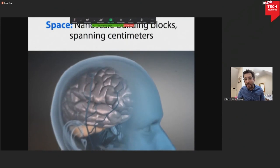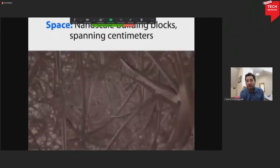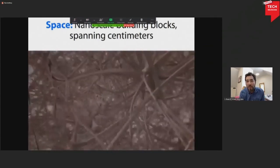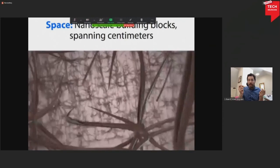One is space and one is time. So what do I mean by that? Well, brain cells, neurons are gigantic cells. They can be centimeters in spatial extent. But if you zoom in into the brain, you see these tiny connections called synapses that connect the cells.